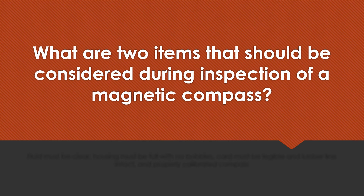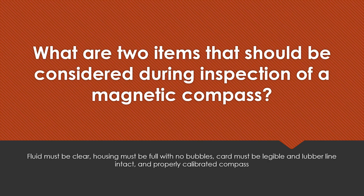What are two items that should be considered during inspection of a magnetic compass? Fluid should be clear, housing must be full with no bubbles, cards should be legible and the lubber line intact, and it should be a properly calibrated compass.